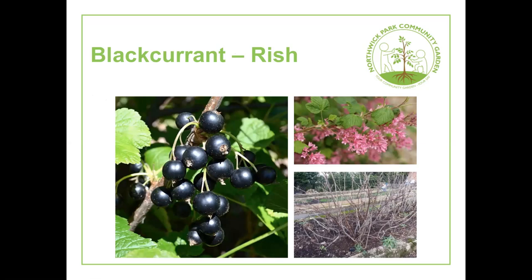Rish is going to talk about the blackcurrant, which most people will be familiar with. There are a few dotted around the garden at the moment and some berries are coming through right now. The top right picture shows some flowers from earlier this year, and there's also a picture of what it looked like in winter — to give an overview of what it looks like throughout the year.